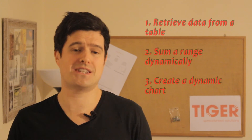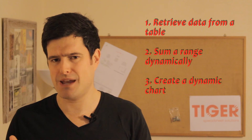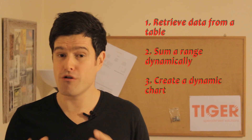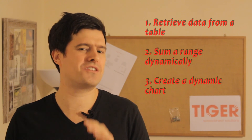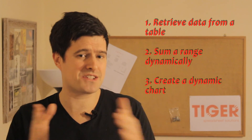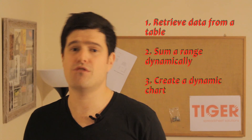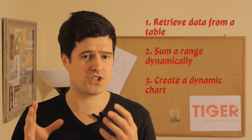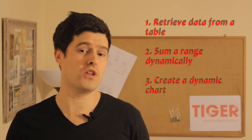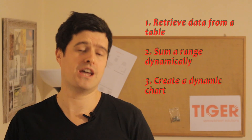So what are we going to look at? The first application is a very simple one — just retrieving some data from a table. The second application, more interesting, we're going to harness the unique capabilities of OFFSET to dynamically sum a range of cells — a really neat application. Finally, we're going to combine OFFSET with a chart to create what I call a dynamic chart, which is another really cool feature you can use in your spreadsheets.